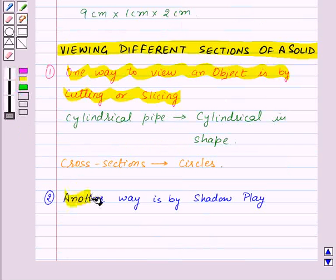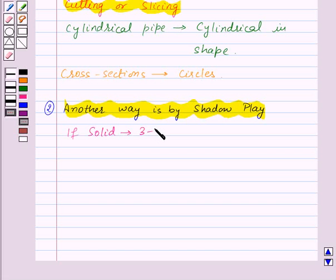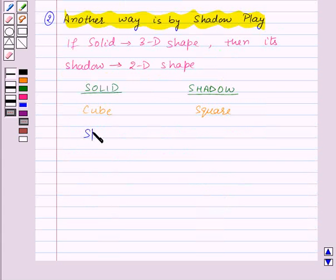Now another way is by shadow play. For shadow play we need a source of light and some solid shapes. If we have an overhead projector, then we can place the solid under its lamp and we can see the shadow of the solid. If the solid is a three-dimensional shape, then its shadow will be a two-dimensional shape. For example, if we place a cube under the lamp, then its shadow will be a square. The shadow of a sphere, say an orange or a ball, will be a circle.